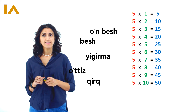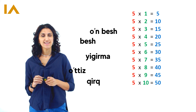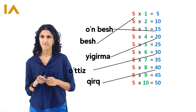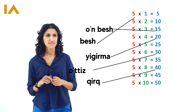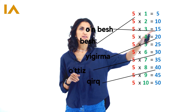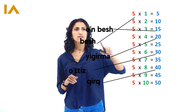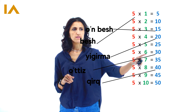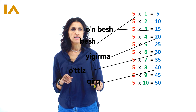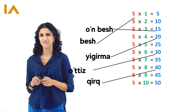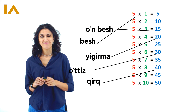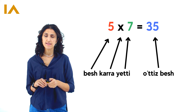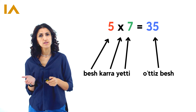So, on beş is here, beş is here. Yirmi is twenty, otuz is thirty, qırq is forty. Beş karra yetti, otuz beş.